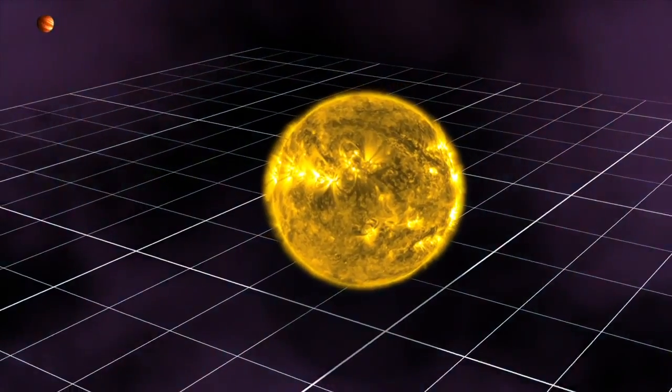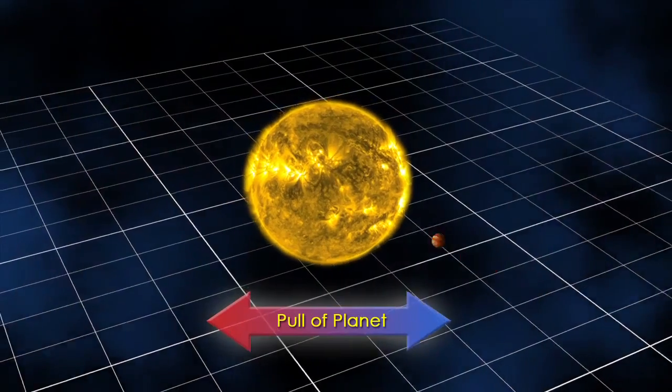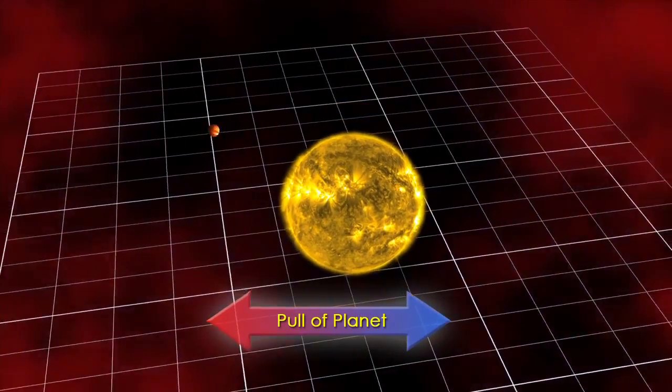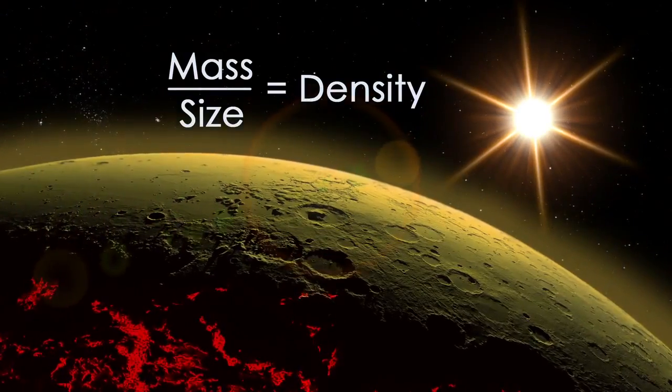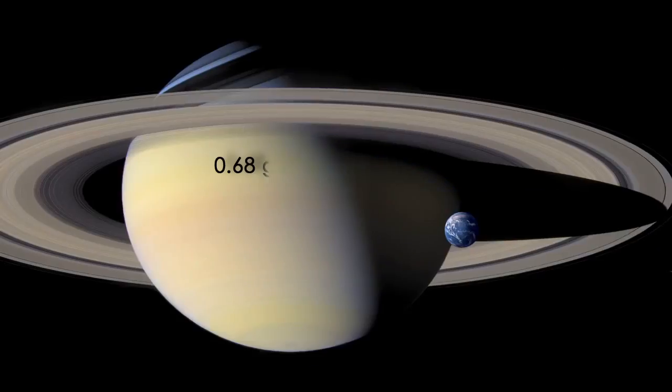By observing an exoplanet's gravitational pull on its star, astronomers can also determine the planet's mass and thus calculate its density to see if it is composed of rock, like Earth, or gas, like Saturn.